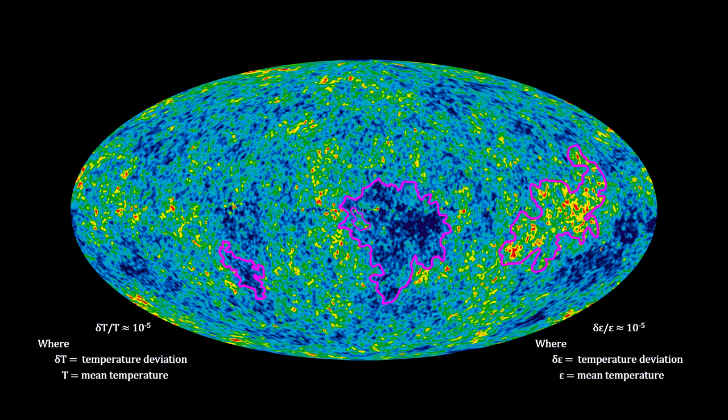We can tweak the variables to produce an energy density deviation on the order of 10 to the minus 5, the amount of the temperature deviation we found in the CMB. These tiny quantum fluctuations are the origin of the anisotropy in the CMB that eventually led to the large galaxy superclusters and great voids we see around the universe today.